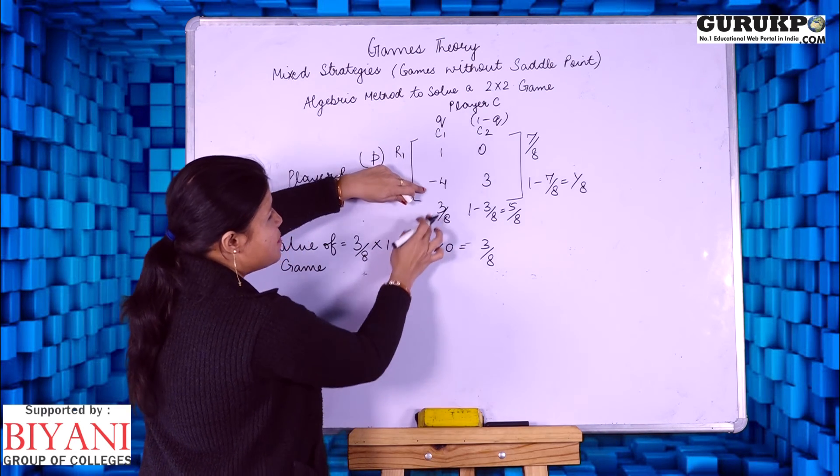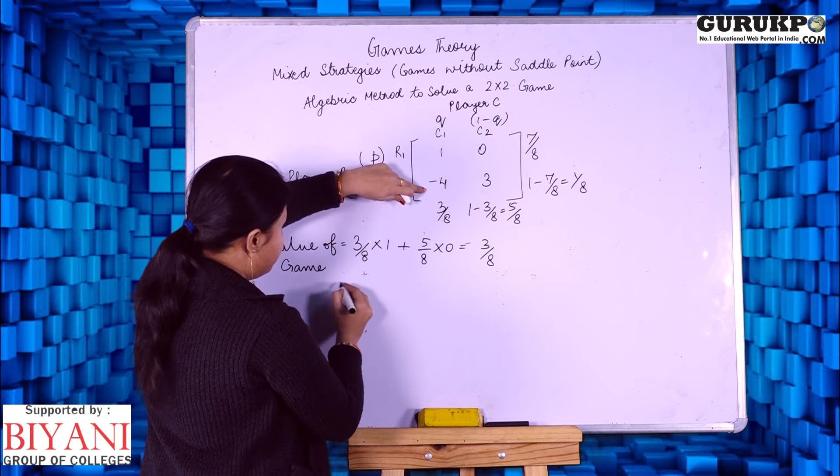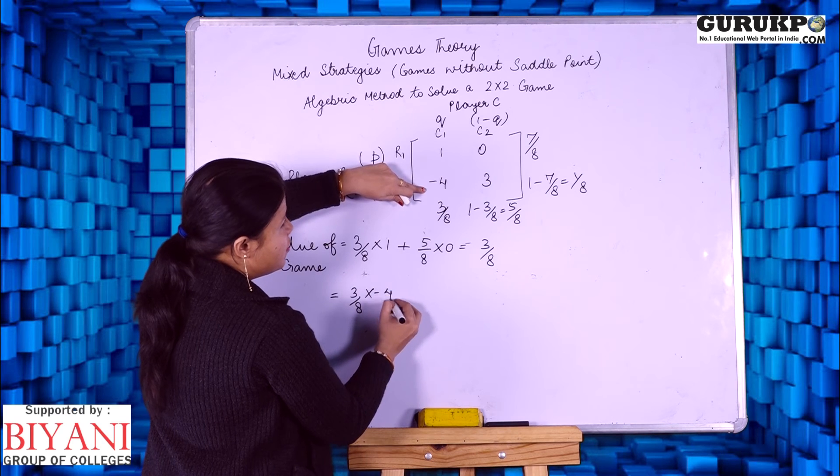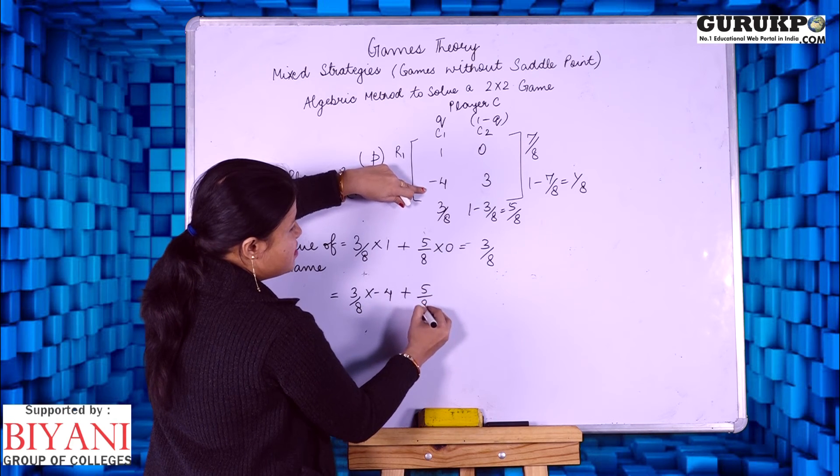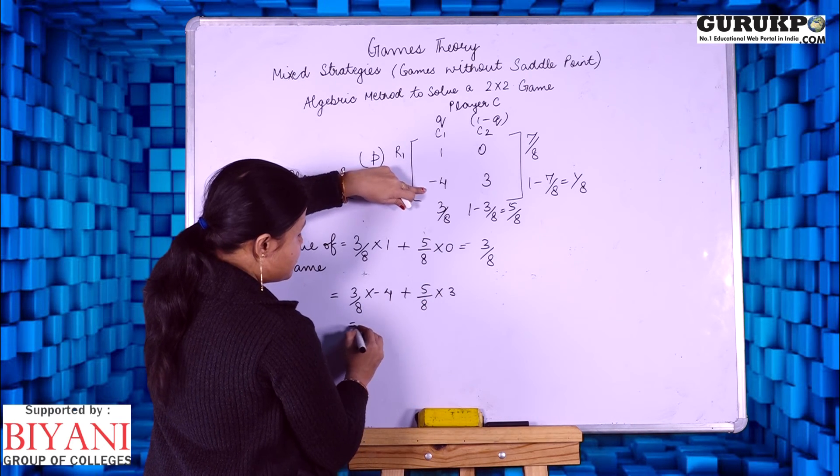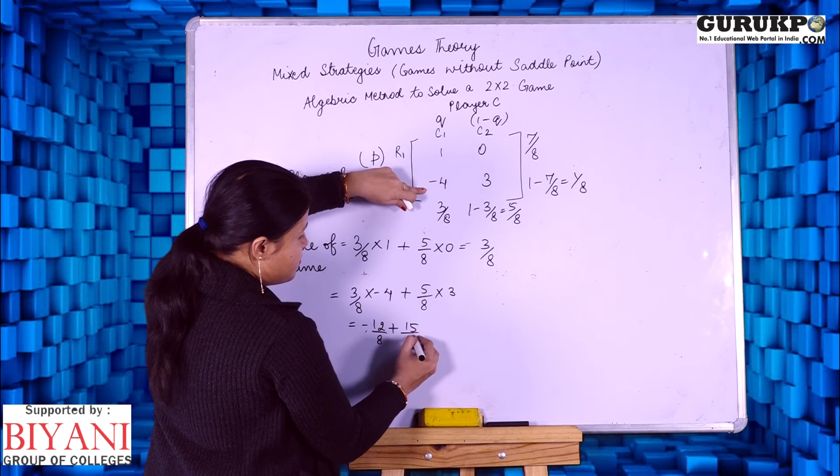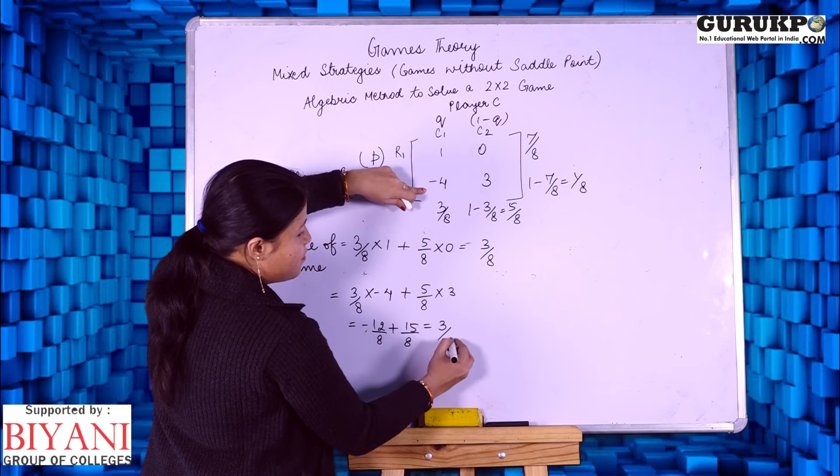Again, I am using the same strategy for column player: 3 by 8 into minus 4 plus 5 by 8 into 3. It comes to minus 12 by 8 plus 15 by 8. Again, it comes to 3 by 8.